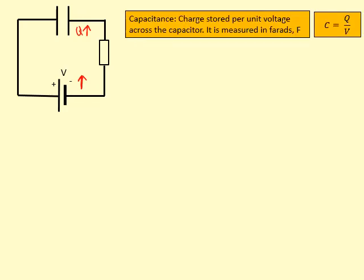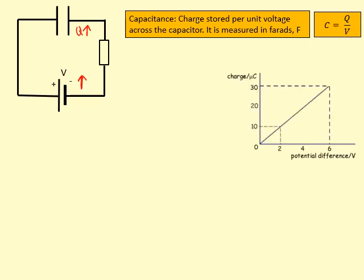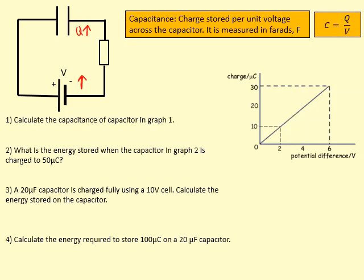Capacitance is defined as the charge stored per unit voltage across the capacitor. It's measured in farads. As you apply more and more voltage, you can store more and more charge. Capacitance measures how much charge you store per voltage.